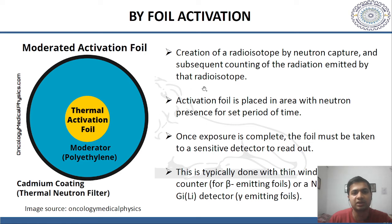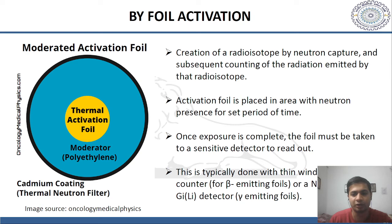The next method is foil activation. It involves creation of a radioisotope by neutron capture and subsequent counting of the radiation emitted by that radioisotope. The activation foil is placed in an area with neutron presence for a set period of time. Once exposure is complete, the foil is taken to a sensitive detector to read out — typically a thin-window Geiger counter for beta-emitting foils or a NaI crystal detector for gamma-emitting foils.